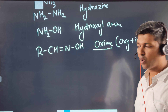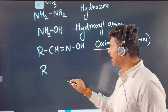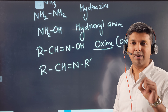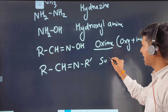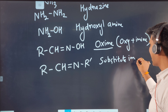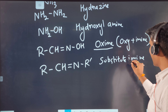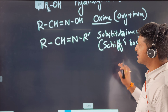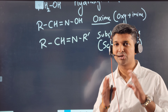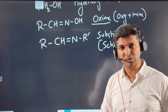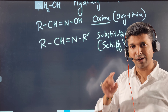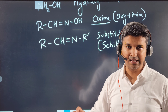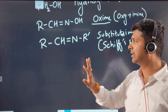RCH=NR' is a substituted imine, and it is called a Schiff's base. Don't confuse Schiff's base with Schiff's reagent. In the chapter on aldehydes and ketones, we used Schiff's reagent — which is para-rosaniline — to distinguish between aldehydes and ketones. Schiff's base, however, is a substituted imine — a different thing entirely.